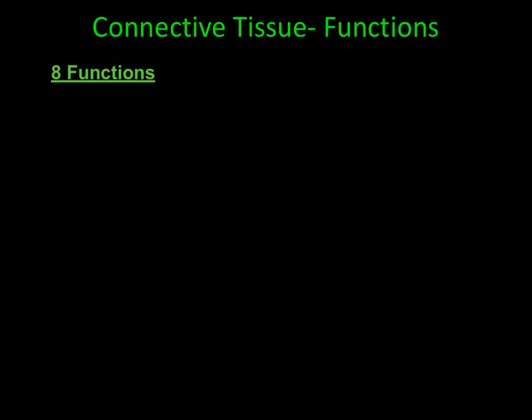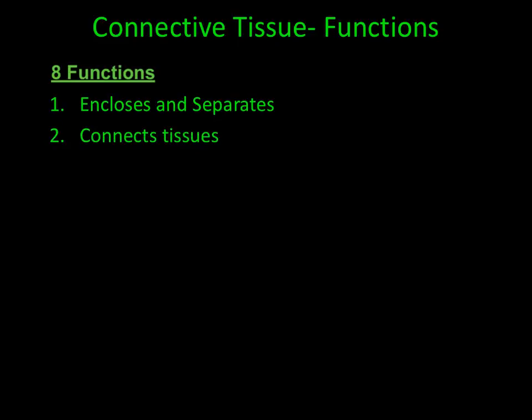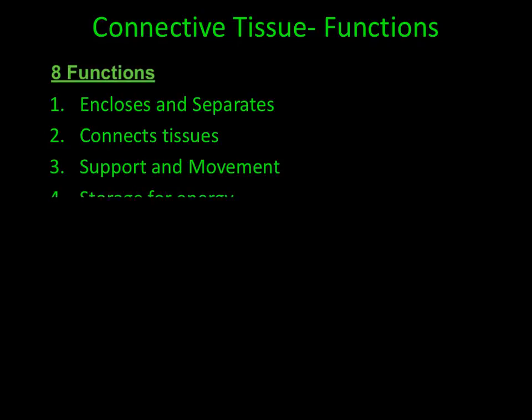The first function of connective tissue is that it encloses and separates organs or organ systems. The second function is that connective tissue can connect or bind other tissues together. The third function is support and movement. The fourth function is that connective tissue can be used as storage for energy.